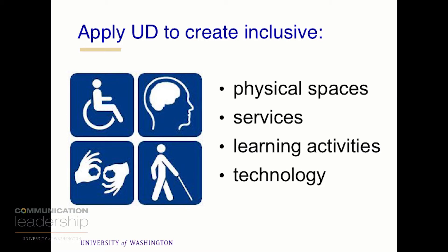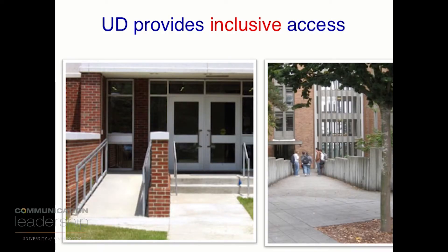Where might we apply this? You can apply it to create inclusive physical environments, services, learning activities, and technology. And universal design will then provide inclusive access. One quick example from our campus: these are two buildings on our campus. On the left you see an ADA-compliant entrance to a building where we have a ramp and steps right next to each other — ADA compliant, but it's not inclusive. If I'm walking into that building with someone who's using a walker, we have to part ways. On the right is a sloping entrance that is the main entrance — a very wide ramp. That's the main entrance. The area where you can use stairs is there, but the main entrance is inclusive of everyone.